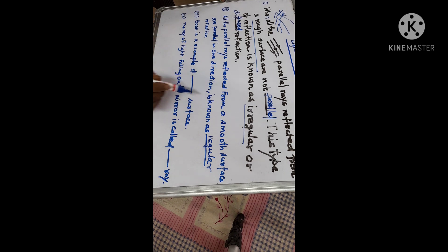When parallel rays, parallel rays of light, this is the smooth surface. And these are the parallel rays. And after reflection, it will go like this. And they all are parallel. And this type of reflection is known as regular reflection.